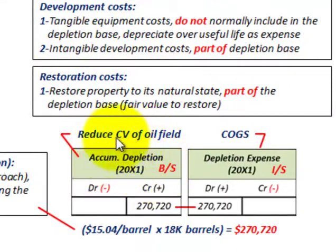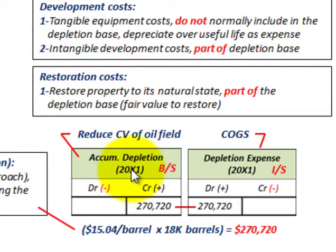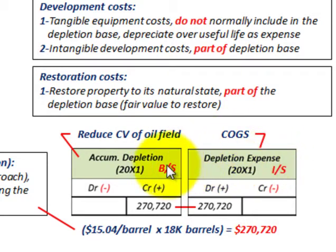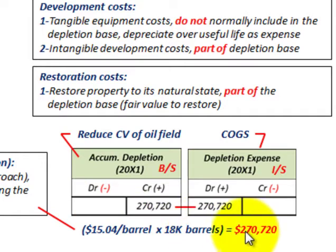For our example in 20X1, let's look at how we would record our accumulated depletion, which reduces the carrying value of the oil field we leased. This acts as a contra asset account to whatever we have capitalized in the cost of this oil field. The accumulated depletion account is on our balance sheet, and on our income statement we recognize the depletion expense for the year 20X1, which acts as our cost of goods sold. We estimated the total cost per barrel of $15.04.